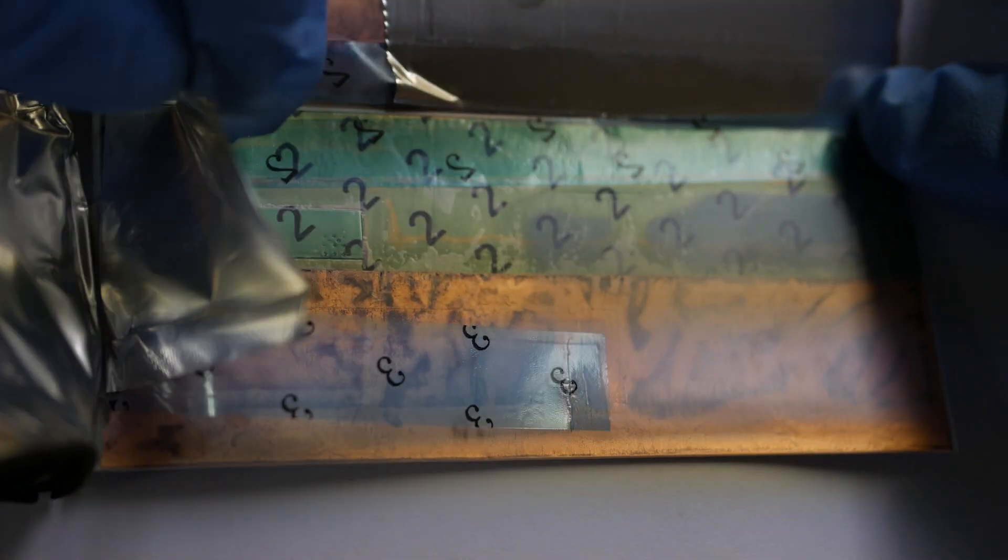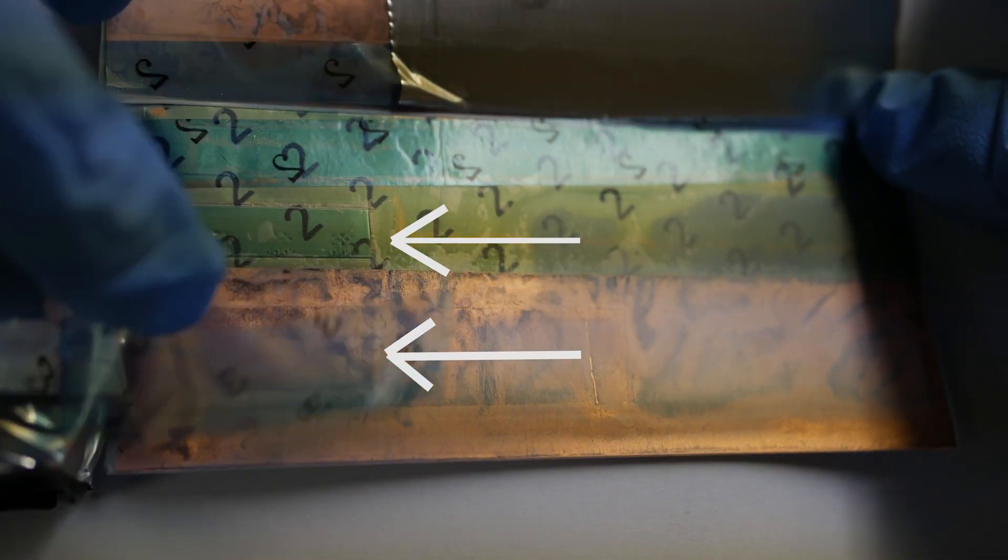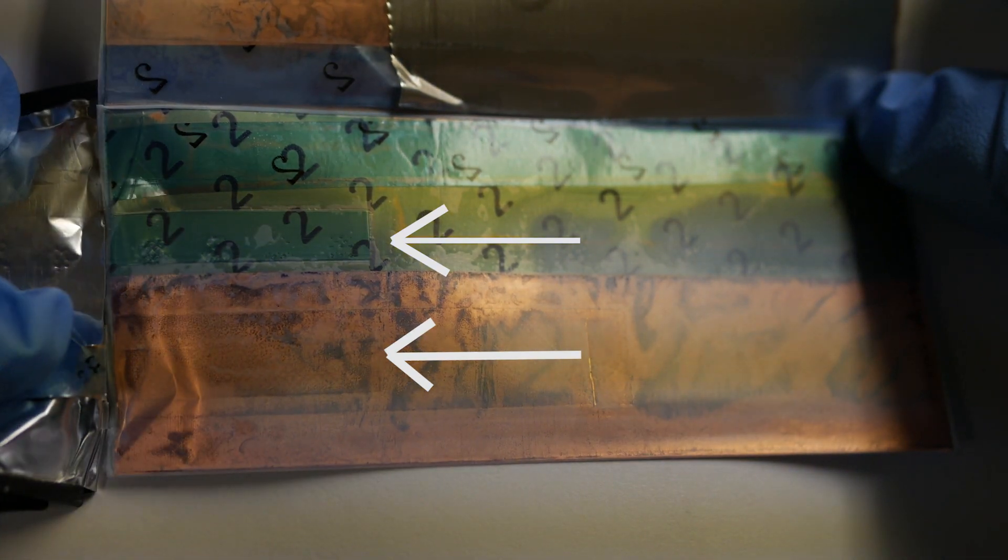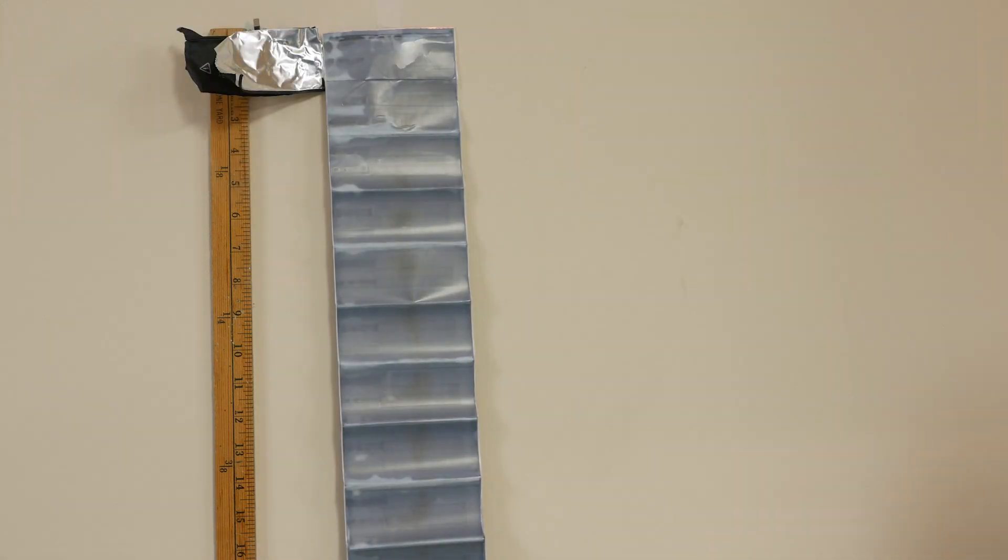Now here we can see both of the terminal connections at the end of the roll. Both the anode and cathode rolls end up being about 20 inches long.